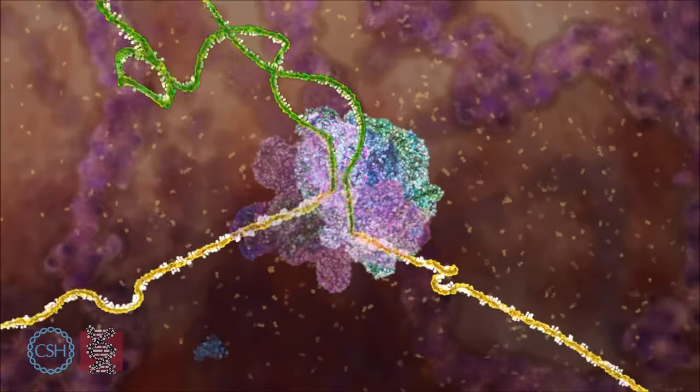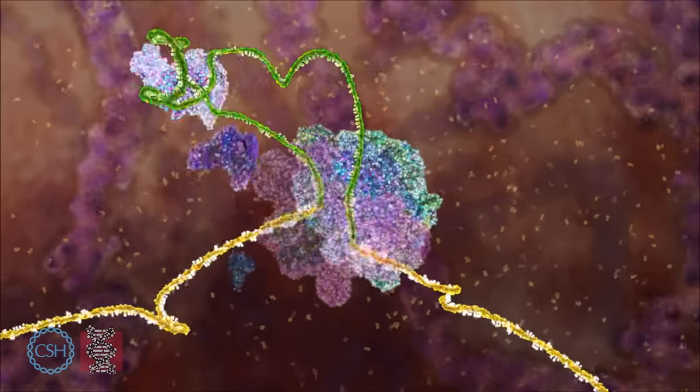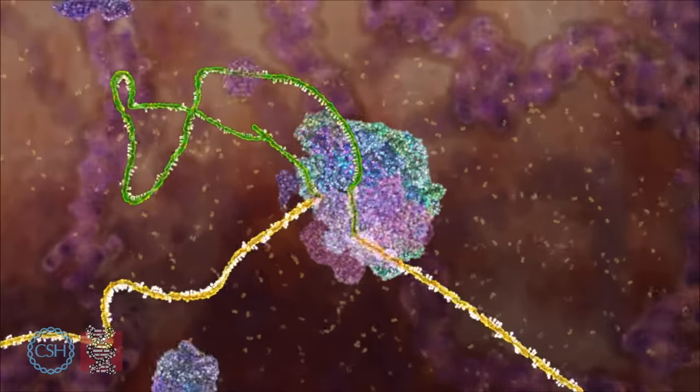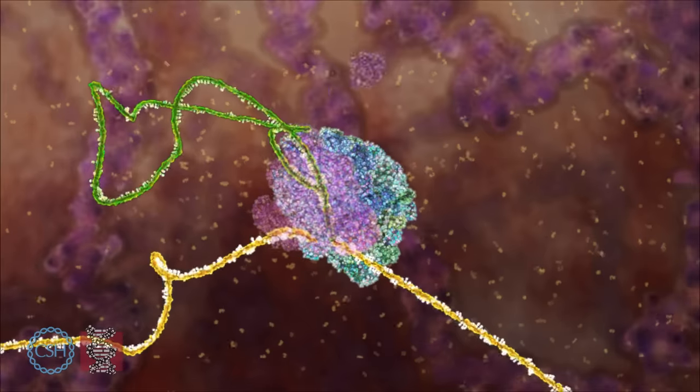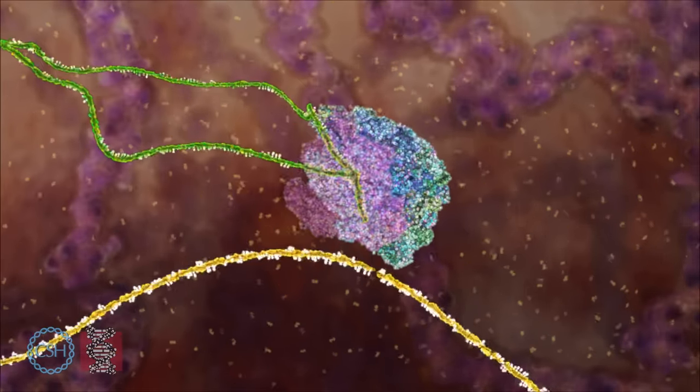The splicesome then brings the exons on either side of the intron very close together ready to be cut. One end of the intron is cut and folded back on itself to join and form a loop. The splicesome then cuts the RNA to release the loop and join the two exons together.